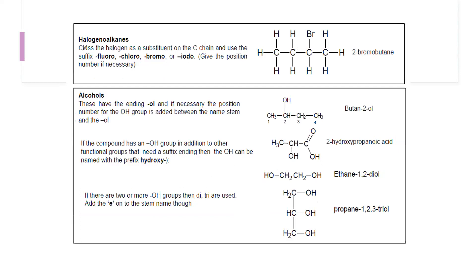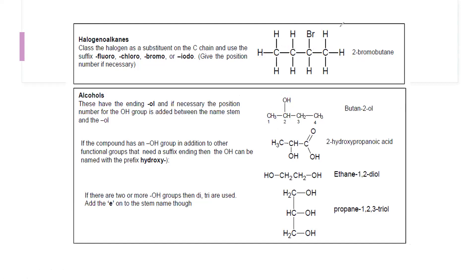For halogenoalkanes, we use the terms fluoro, chloro, bromo, or iodo and give the position. For a four-carbon chain with bromine at position 2, it is 2-bromobutane. For alcohols, OH takes priority, so we count from the nearest end to OH. For a four-carbon chain with OH at position 2, it is butan-2-ol — we do not write the 'e' before '-ol' because 'ol' starts with a vowel, so we write only 'an'.